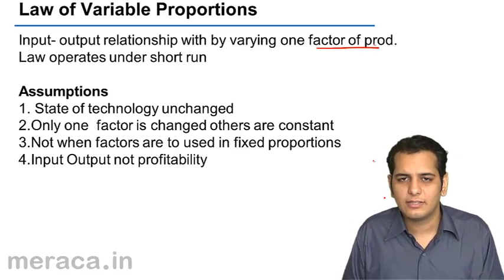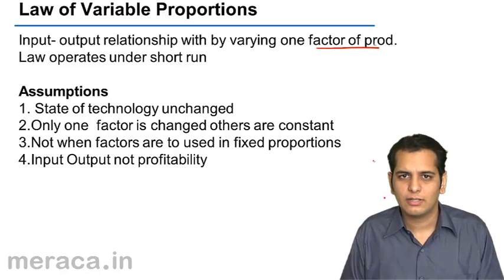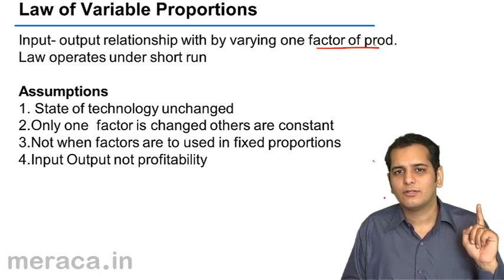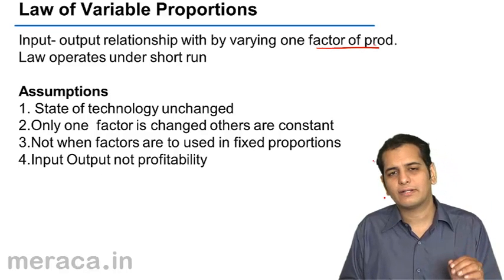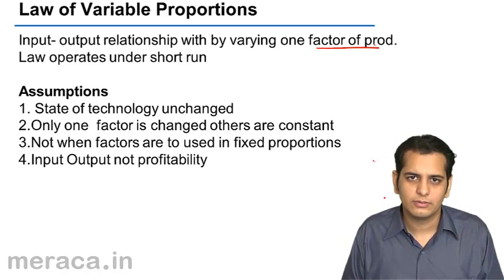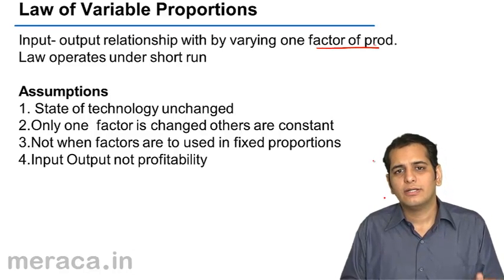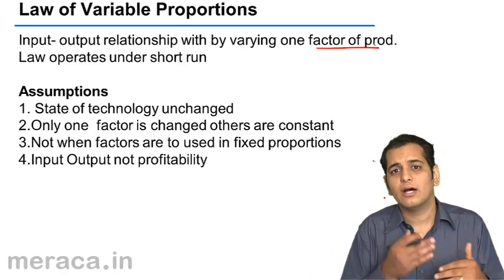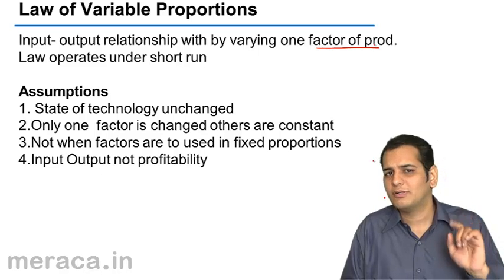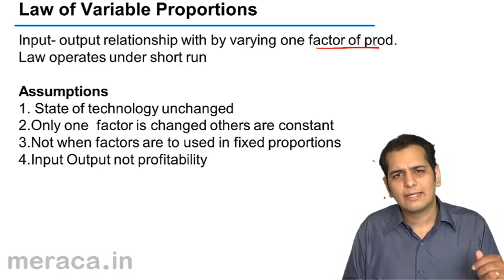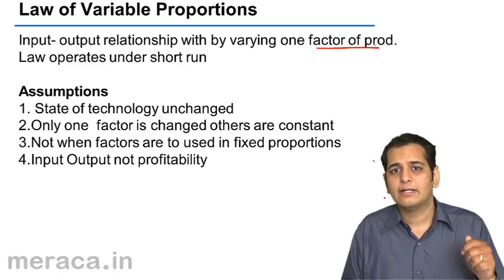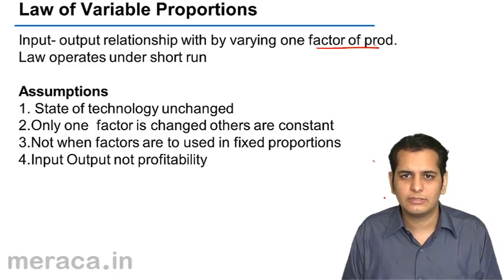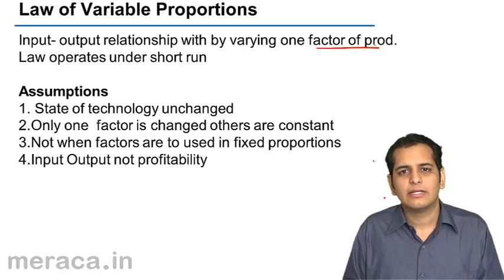This law operates only in the short run. Short run is a period where only one factor of production is variable, while the other factors of production remain constant and do not change, because it is a very short period. In such a short period, one factor of production can be changed, and generally we take labor as variable, because labor can be increased or decreased in a short period.